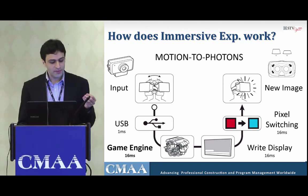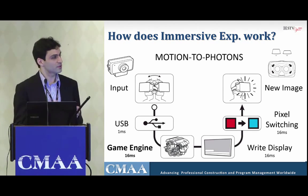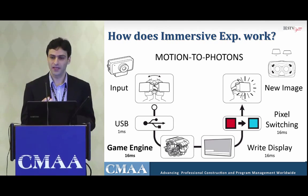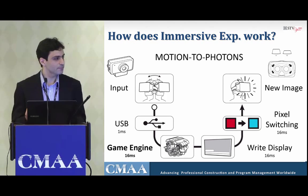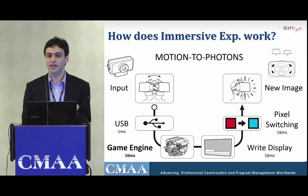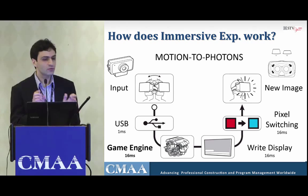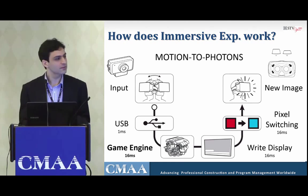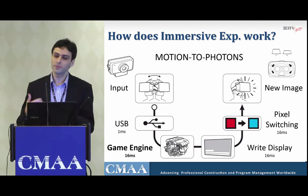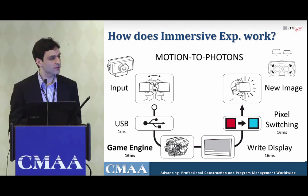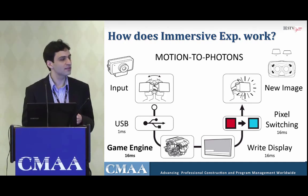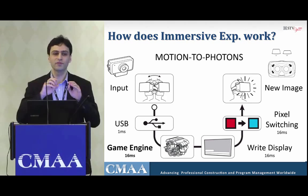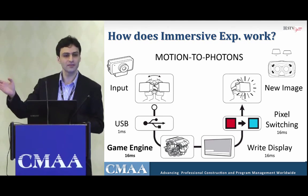Here's how the immersive experience works. A position tracker camera tracks your position. A head-mounted display tracks your head movements, sending data to the computer in about one millisecond. A game engine then renders two slightly different images — one for the right eye, one for the left — taking about 16 milliseconds, just like stereoscopy. Rendering on the display screen takes another 16 milliseconds, and pixel switching adds more. Everything together takes about 50 milliseconds. Lenses project the image so you don't see the screen borders and feel fully immersed.